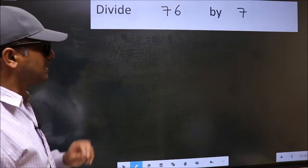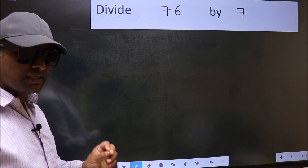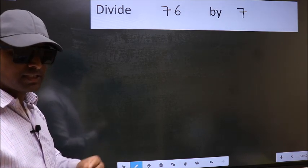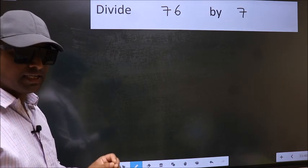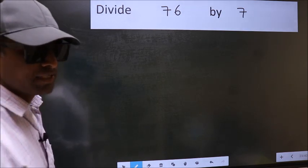Divide 76 by 7. While doing this division, many do this mistake. What is the mistake that they do, I will let you know. But before that, we should frame it in this way.